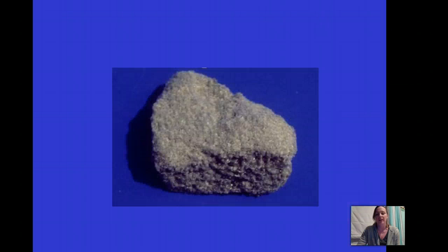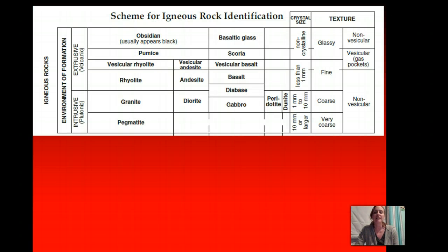Here's another piece of extrusive igneous rock with gas pockets. Now we need to get out our reference table. Find the page that has igneous rock information — write the number of the page in your notes. What we're going to do is go through this and see how we can use the information we just learned in our notes to apply it to this chart.